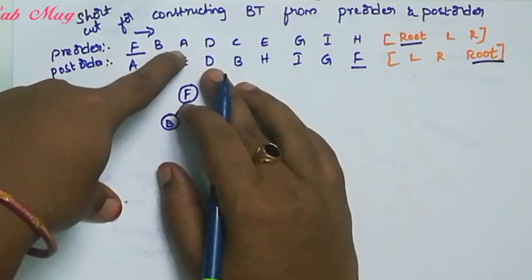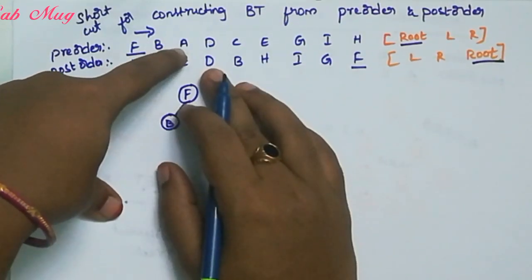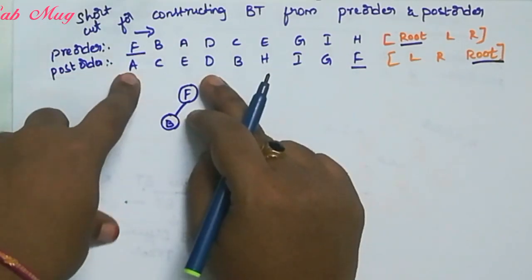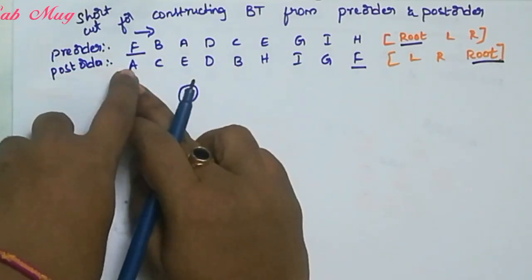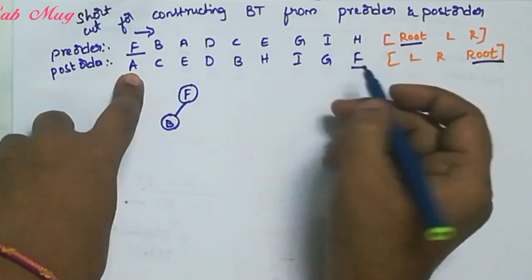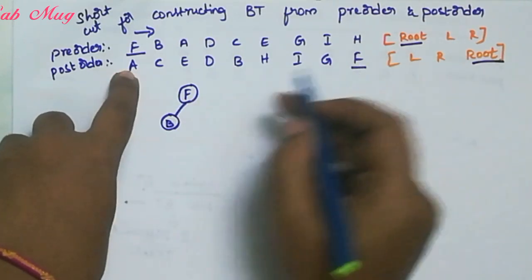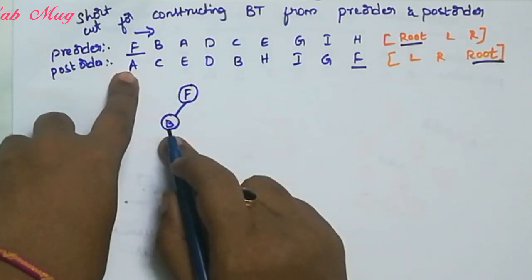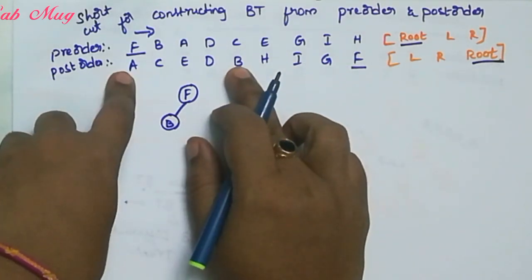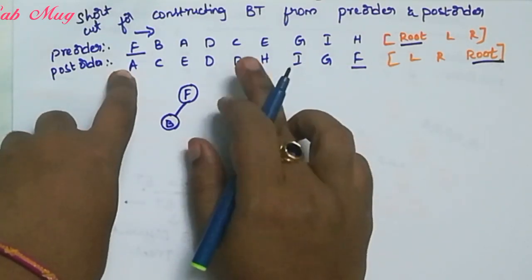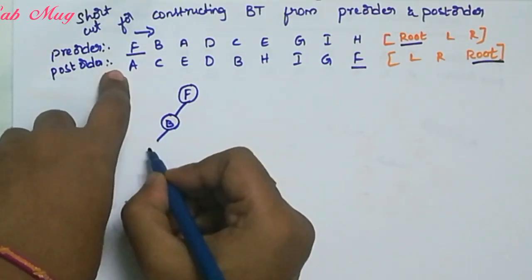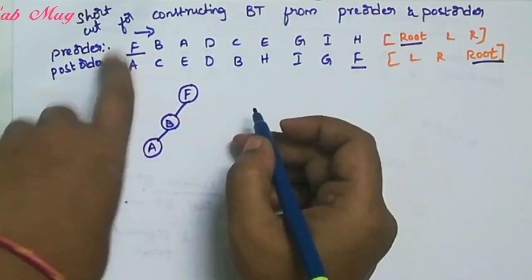The next element is A. So A ekkad undhi? F is the root element, and B is the next root element. A ane edhi B ki left side undhi, so A ni manam left side allot chestham.